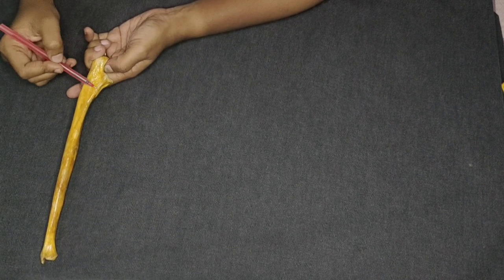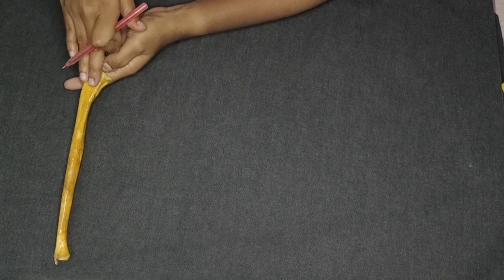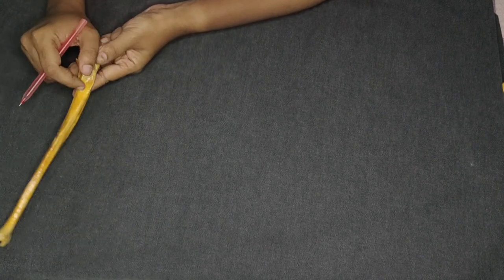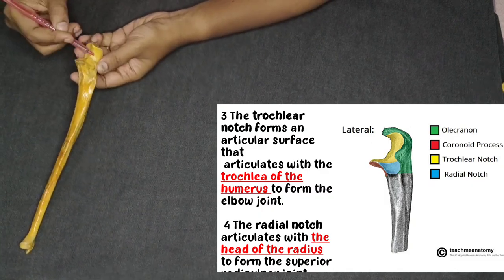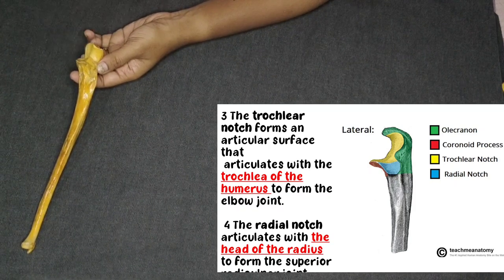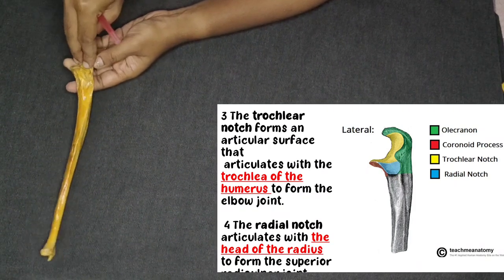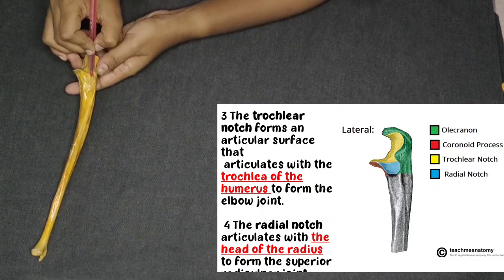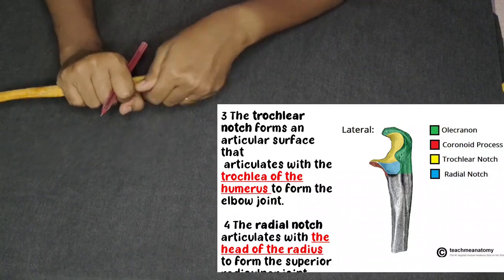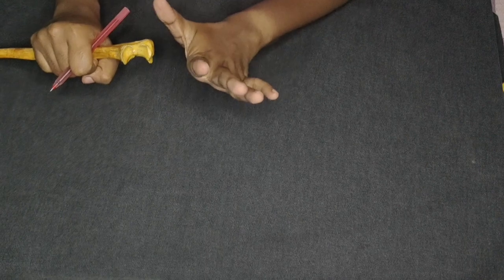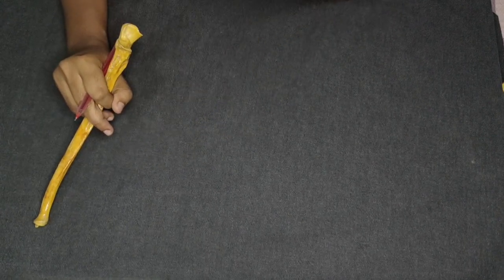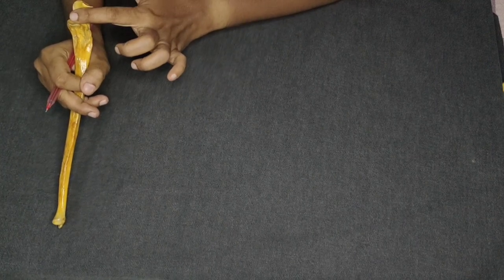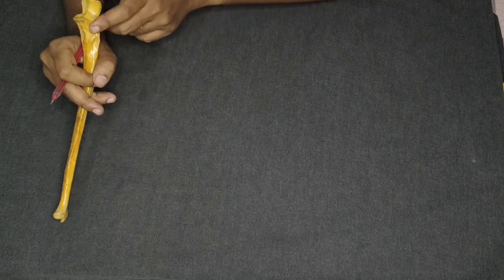Coming to the medial surface — the medial surface is continuous with the medial surface of the shaft. Then, the trochlear notch — it articulates with the trochlea of the humerus. The radial notch — the head of the radius articulates here. That is all about the upper end: olecranon process, coronoid process, trochlear notch, and radial notch.